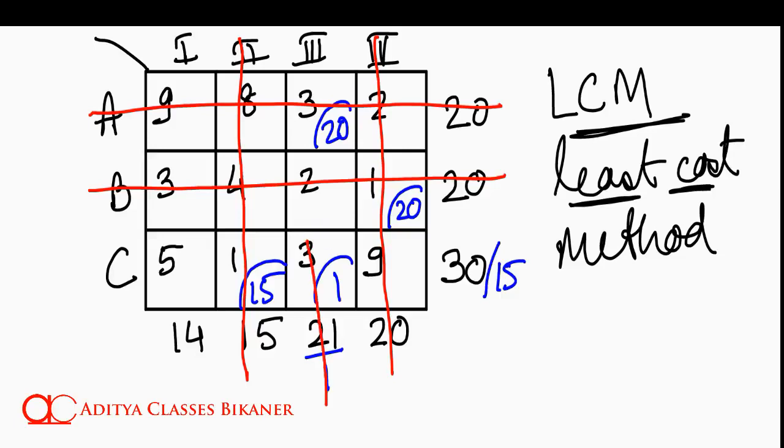So, source 3 is done. Sorry, market 3 is done. And I am left with 15. One more gone. So, I am left with 14 units.